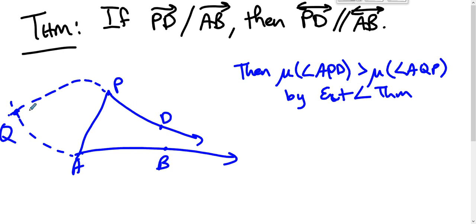That means if this is the bigger one, we can copy this angle over here. We can copy it. We can create a ray PE such that angle DPE is congruent to angle PQA. We can do that. Because APD is bigger than AQP, so we can take this smaller angle and bring it in there.